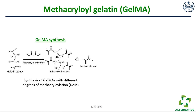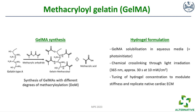The synthesis starts from gelatin type A that reacts with methacrylic anhydride to obtain gelatin methacrylate. This formulation is solubilized in an aqueous medium — normally cell culture media — to avoid potential problems for cells, together with a photo-initiator. Chemical cross-linking happens through light irradiation at 365 nanometers for approximately 50 seconds at 10 milliwatts per centimeter squared.